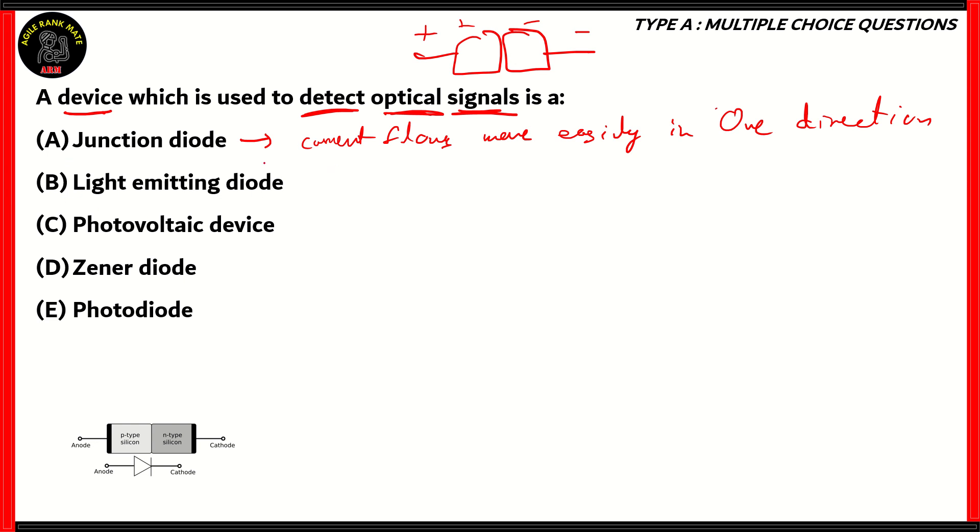Now option B is a light-emitting diode, which we popularly call LEDs. These are forward bias diodes, and their primary function is to emit light. So they're primarily used as a light source. So we use LEDs to light up houses, cars, etc. So therefore, their function is to emit light, not to detect optical signals. So as you can see, options A and B are incorrect.